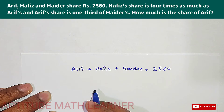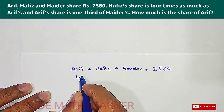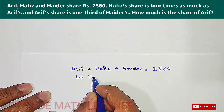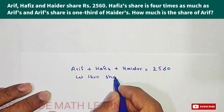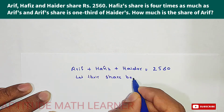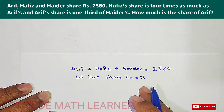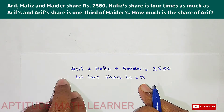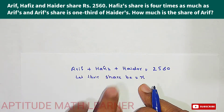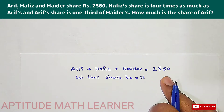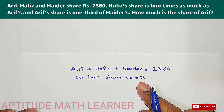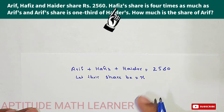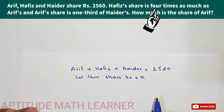So here we take: let the shares of Arif, Hafiz, and Hader be equal to x. We have just taken the share of Arif, Hafiz, and Hader as x. Now, according to the condition given in the question, Hafiz's share is four times as much as Arif's share.